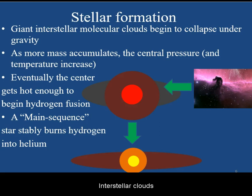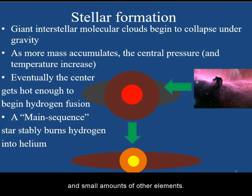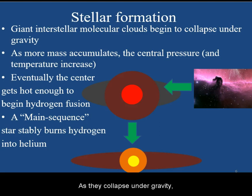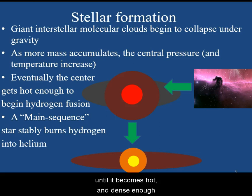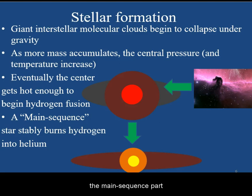Interstellar clouds are made mostly of hydrogen and helium and small amounts of other elements. As they collapse under gravity, their core heats up until it becomes hot and dense enough for hydrogen fusion to commence. This starts the main sequence part of the life of the star.